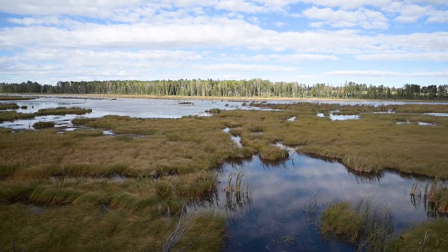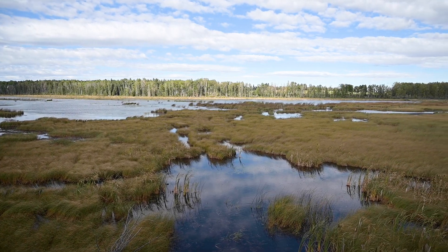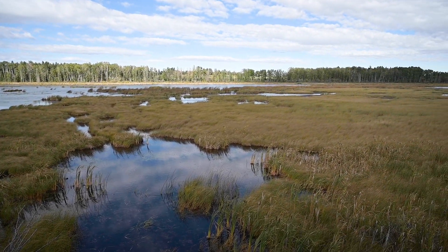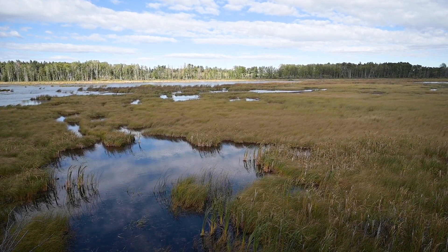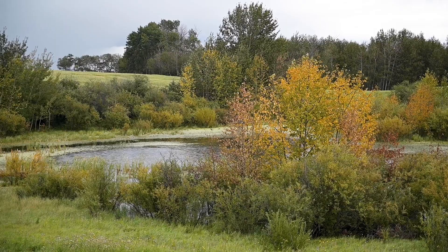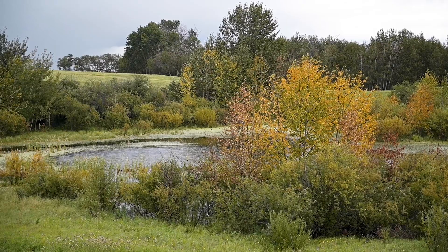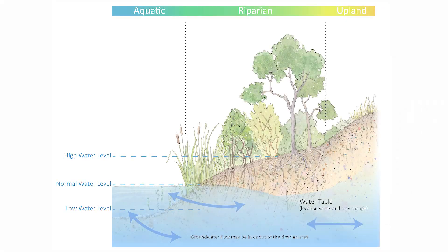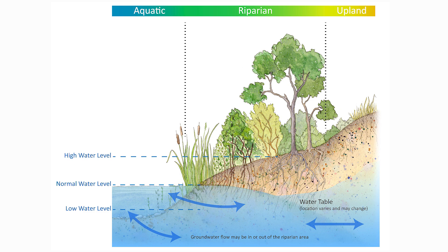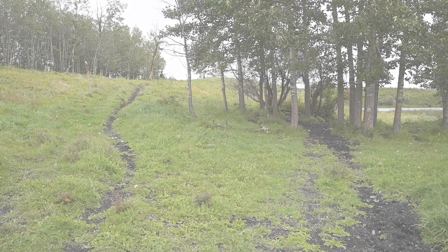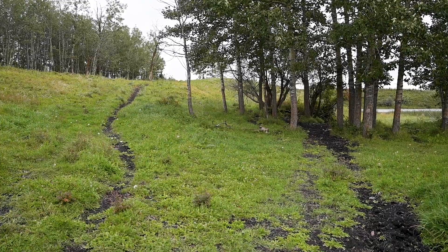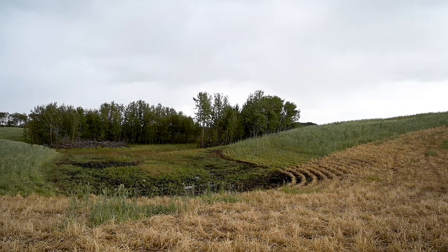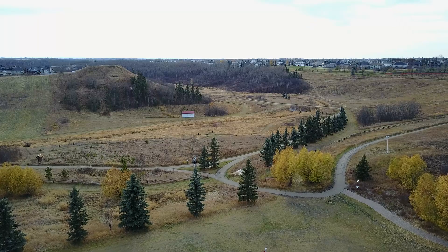Riparian areas are the transition zones between open water and the drier uplands of lakes, wetlands, streams, and rivers. These lush green areas are built and maintained by water, either from a high water table or flooding. If our activities change the plants, soils, or water regime, we can influence the health of these sensitive but vital areas.